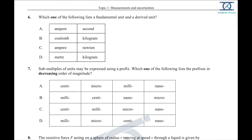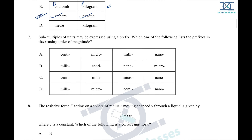Question 6: identifying a fundamental and a derived unit. There are 7 fundamental units; all others are derived. Ampere is fundamental, Newton is derived, coulomb is derived, kilogram is fundamental. So option C — ampere (fundamental) and Newton (derived) — is the right answer.